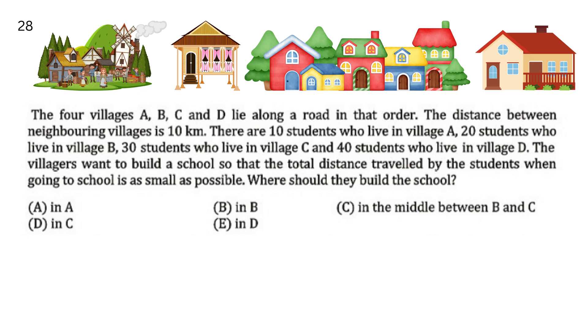The villages want to build a school so that the total distance travelled by the students when going to school is as small as possible. Where should they build the school? Villages ek school build kerna chaate hain, so that students ko as less as possible travel kerna pade. Unko school kaha banana chahiye? Options hain A in A, B in B, C in the middle between B and C, D in C, and option E is in D. Our answer is in C.